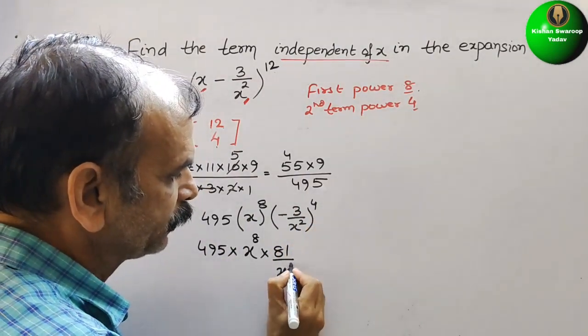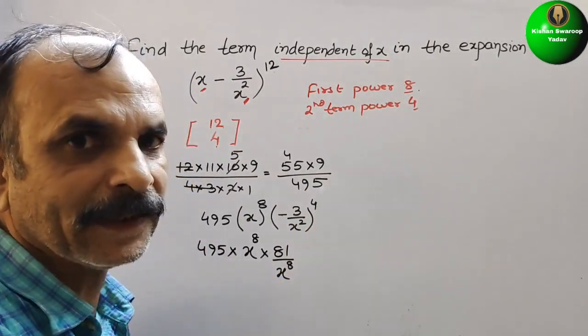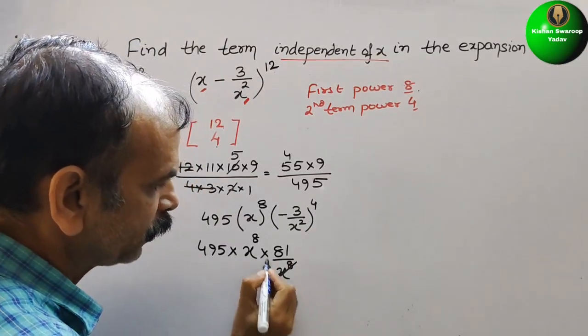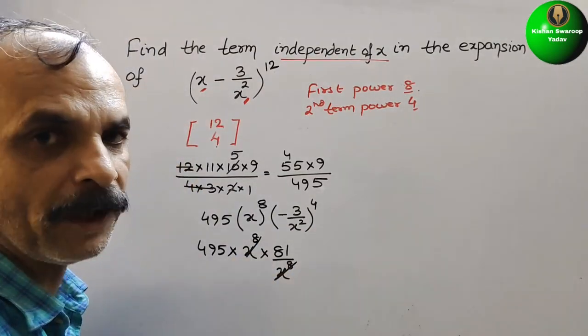So here you will get 81 by x square and the power is 4. So here you will get x8. So now just solve this. This and this will go out, reduce by 1 by 1.